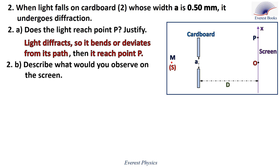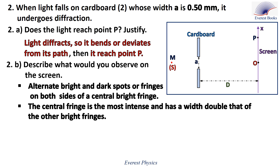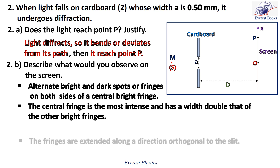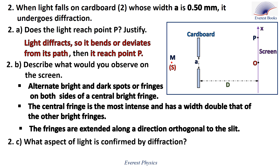Part 2B: what would you observe on the screen? We observe alternating bright and dark fringes on both sides of a central bright fringe. The central fringe is the most intense and has a width double that of the other bright fringes. The fringes extend along a direction orthogonal to the slit — since the slit is vertical, the fringes extend horizontally. The diffraction phenomenon confirms the wave aspect of light.